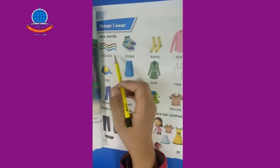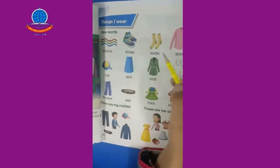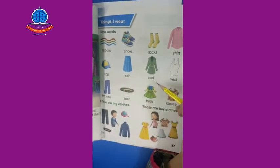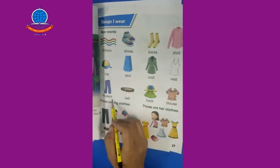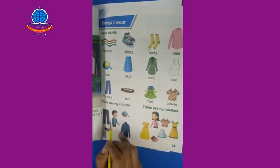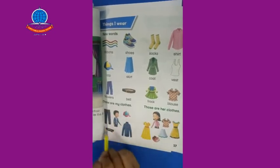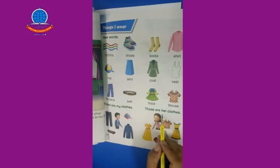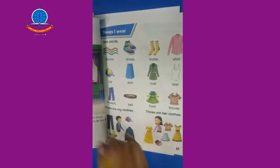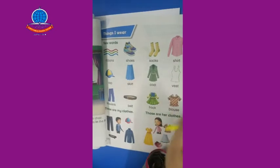Ribbons — girls wear ribbons. Shoes, socks, shirt, cap, skirt, coat, vest, trousers, belt, frock, blouse. This boy is saying: 'These are my clothes, those are her clothes.' You have to learn all these and all the spellings of these objects.